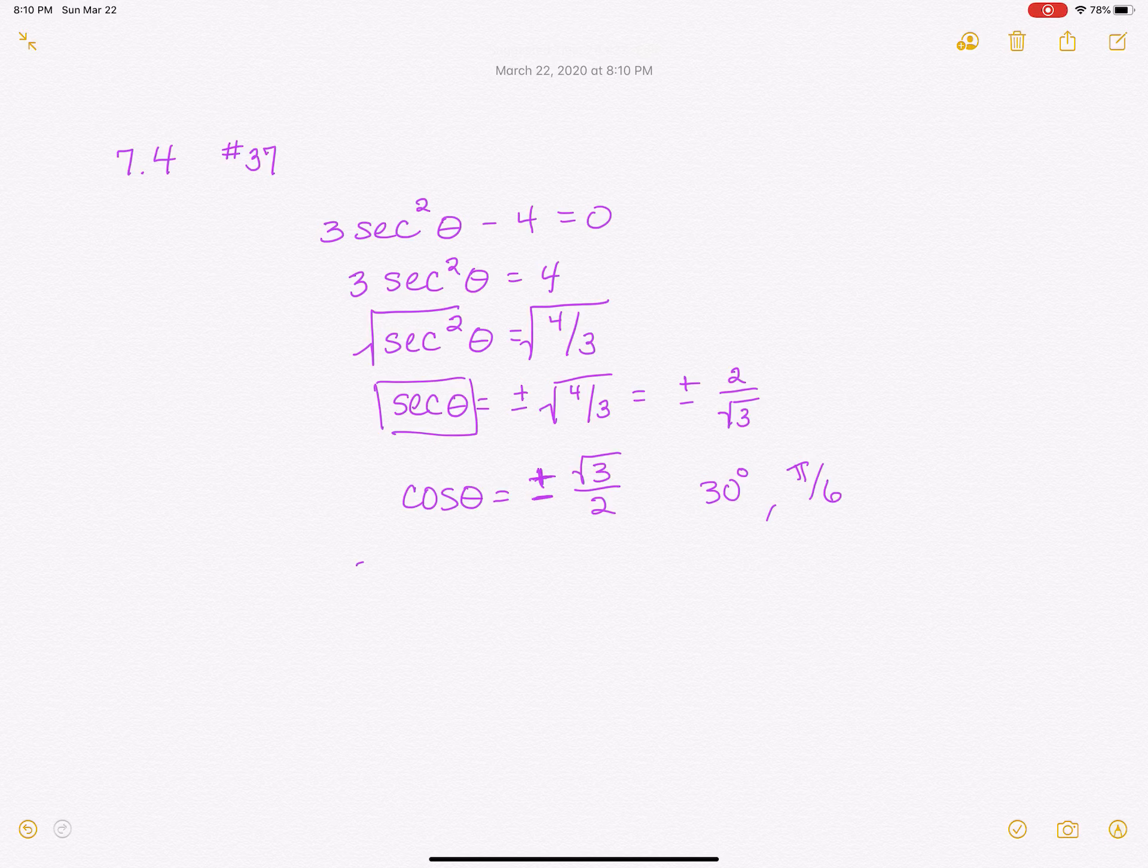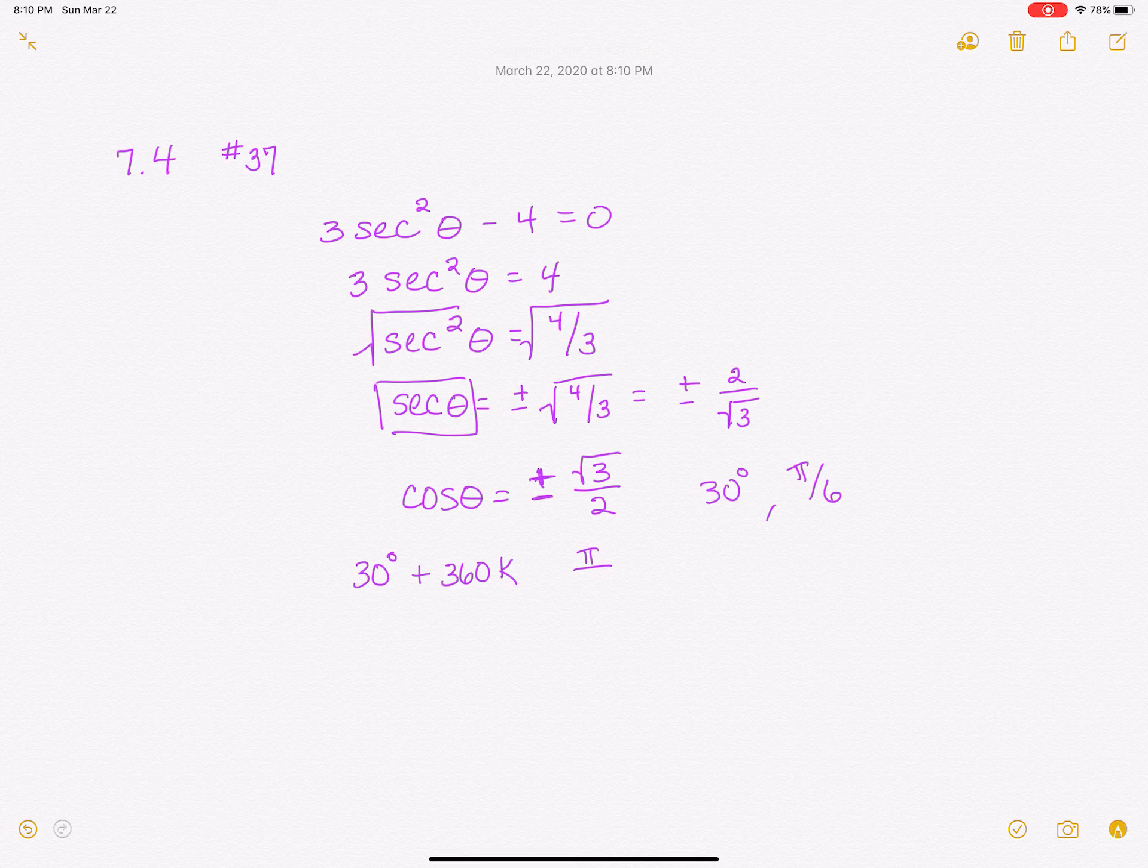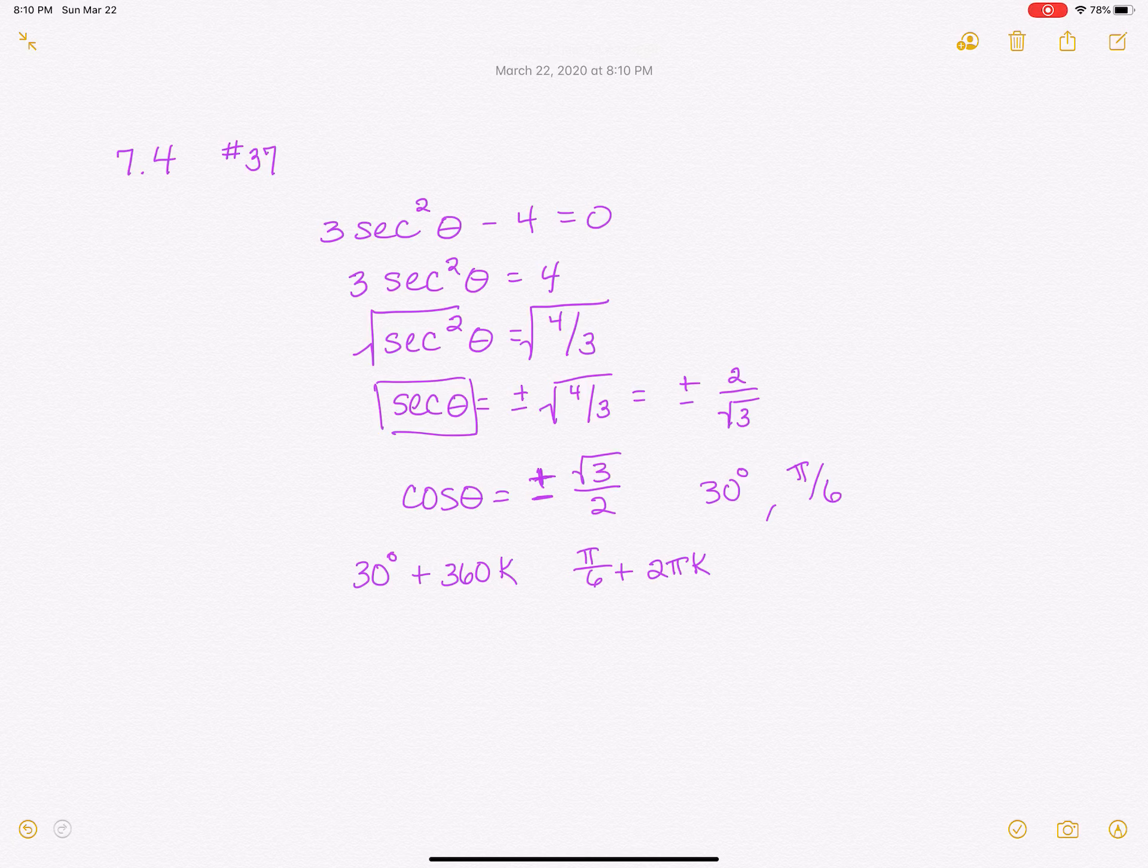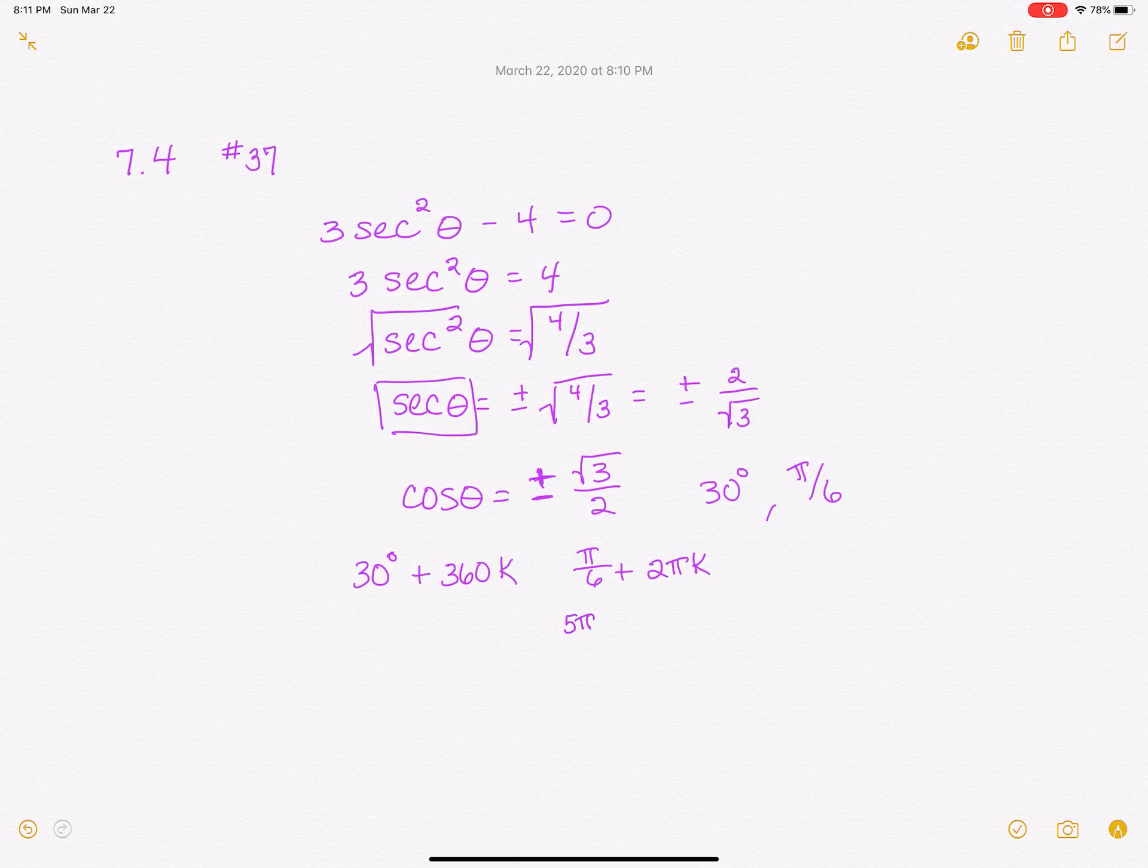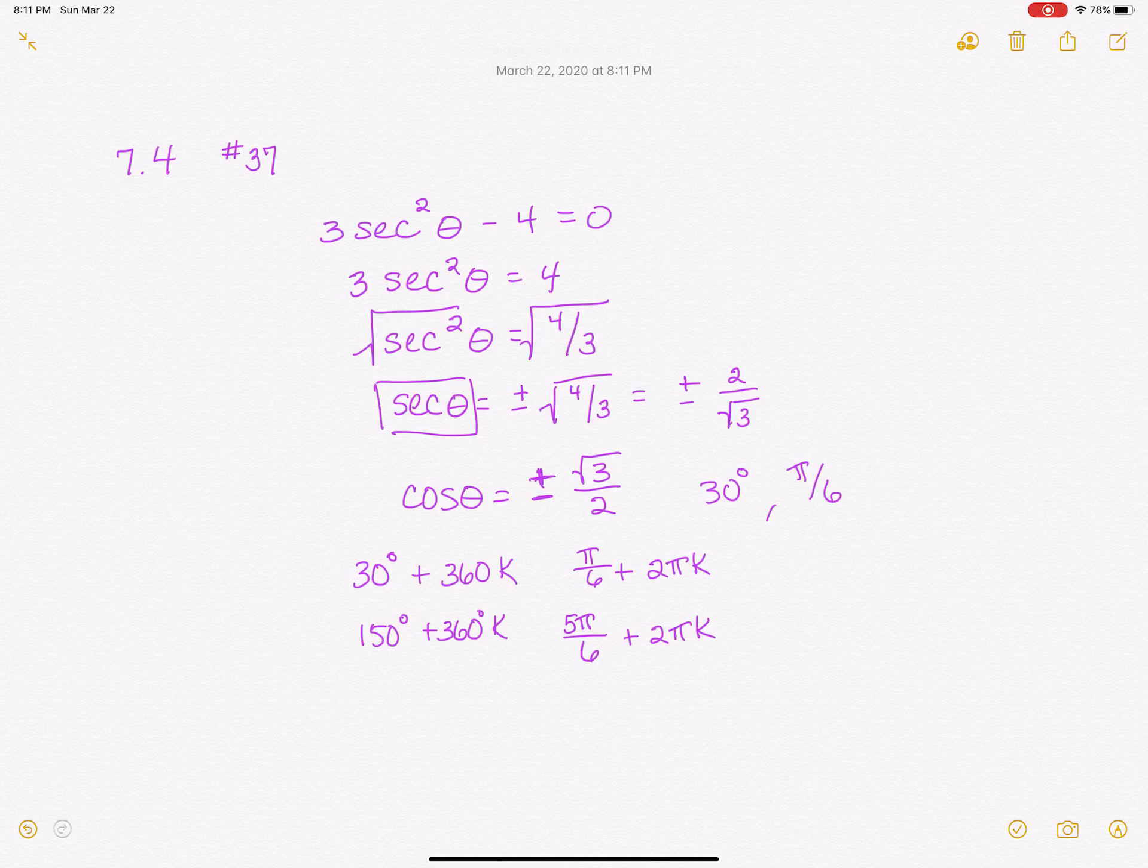Now, if you want to do 30 degrees plus 360 times k, or we could do, if we're doing radians and that's pi over 6 plus 2 pi times k, we could do that. What is the angle coming out of the second quadrant? Well, the angle coming out of the second quadrant is 180 minus 30 or 150 degrees, or we would say 5 pi over 6 plus 2 pi k. Then let's think, and so I'm going to do 150 degrees plus 360 k. In the third quadrant, I would get 180 plus 30, which is 210 degrees plus 360 k.